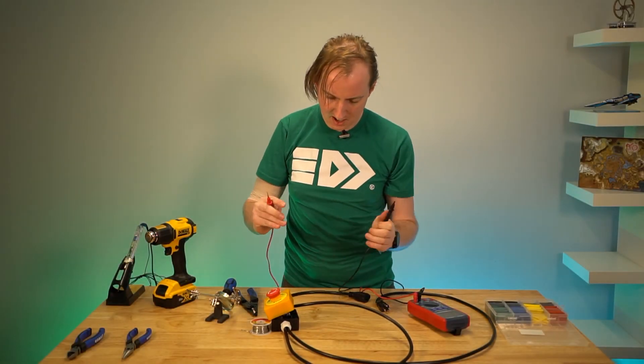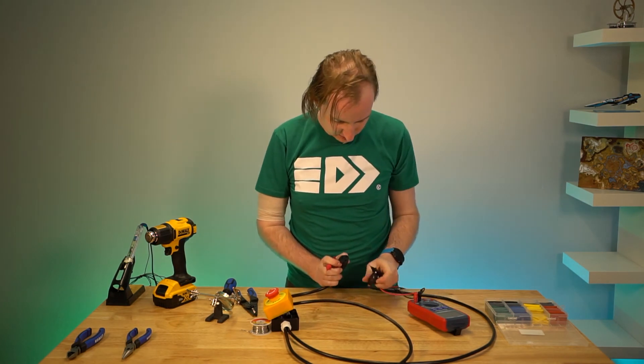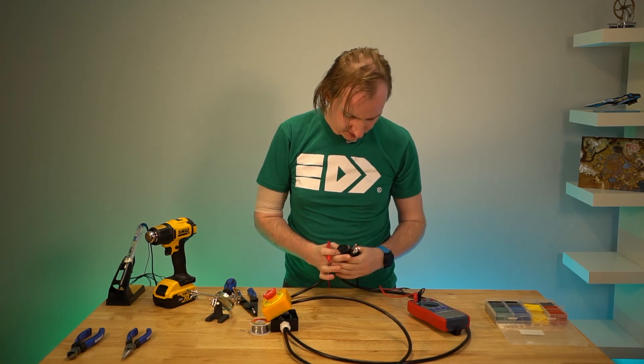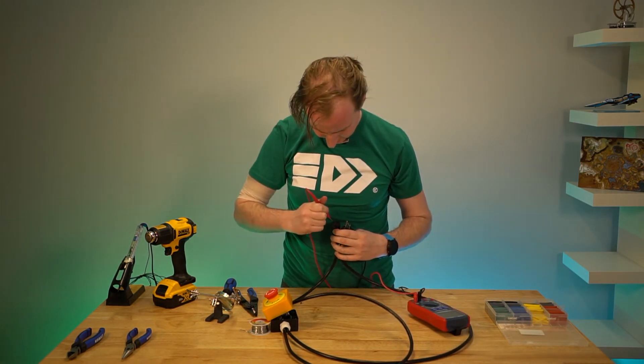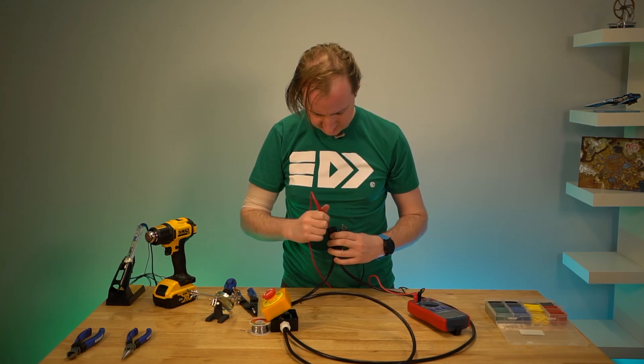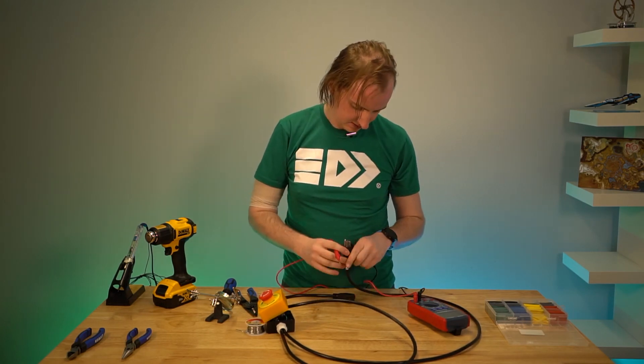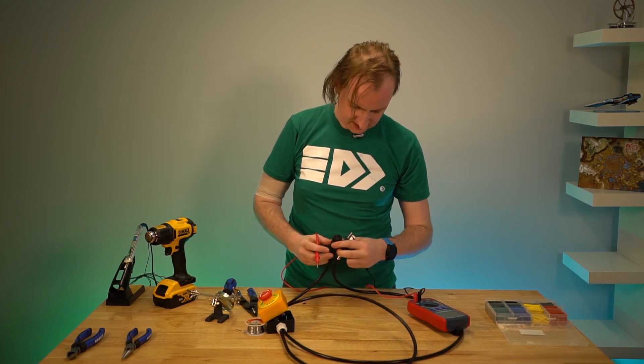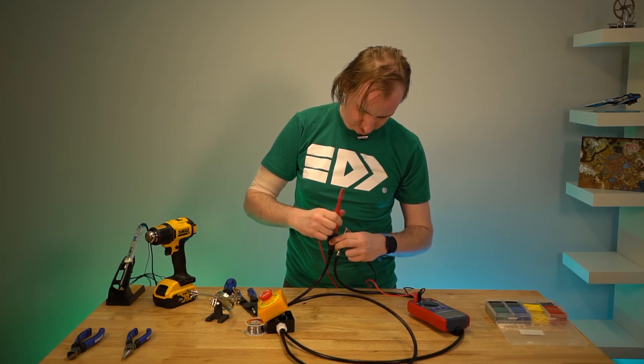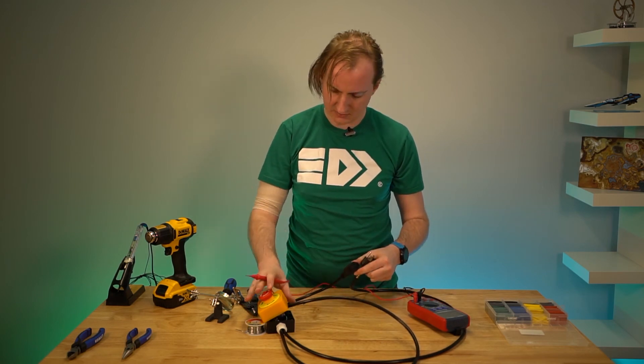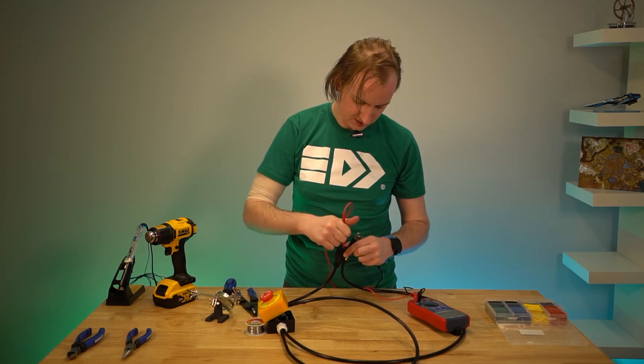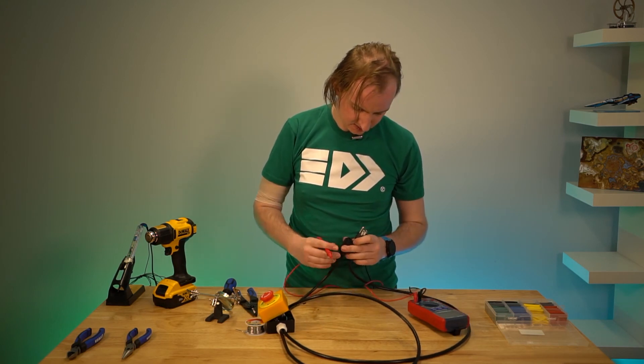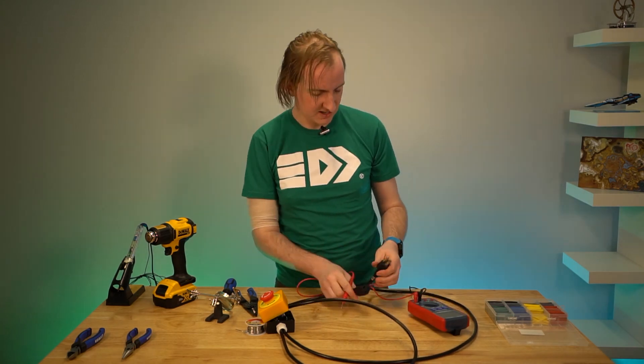So the switch is currently up. So this should conduct between the live and the live. There we go. And then between the neutral and the neutral. Lovely. And that should, of course, continue. Switches down. And the live here is cut off. So perfect. That's working as intended.